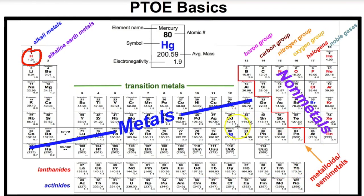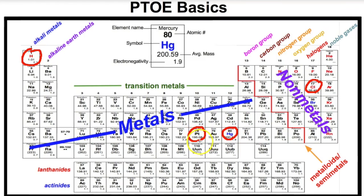You should also look at the different colors on the periodic table. Most elements are shown in black, which means they're solids at room temperature. Red means they're gases at room temperature, and blue means they're liquids at room temperature. So mercury is a metal but also a liquid at room temperature, and most elements on the periodic table are solids at room temperature.